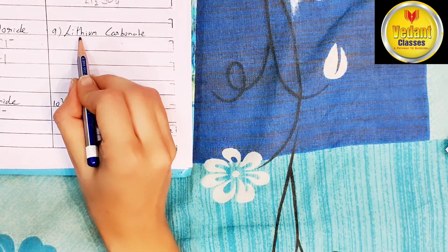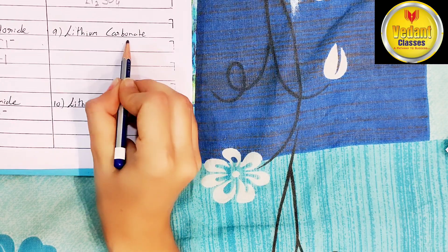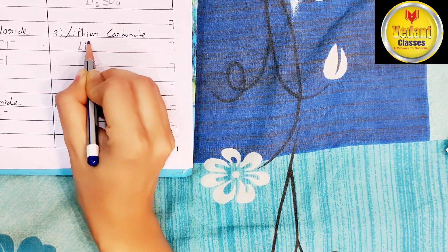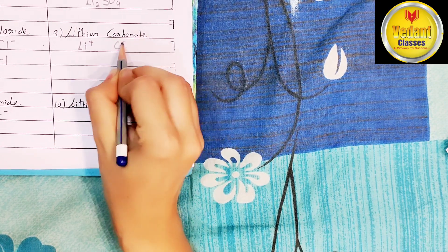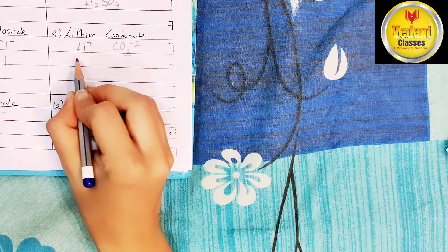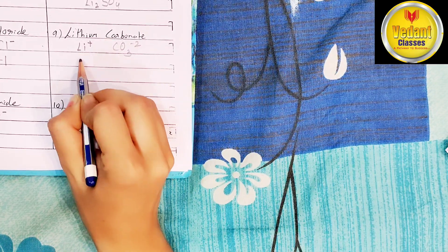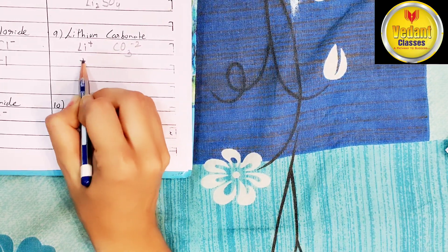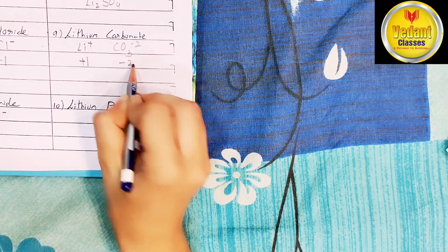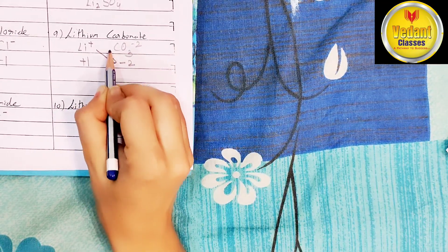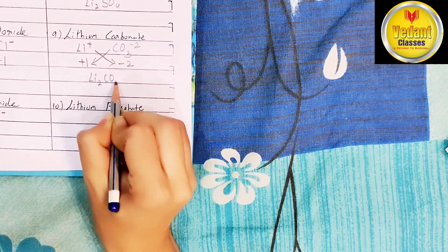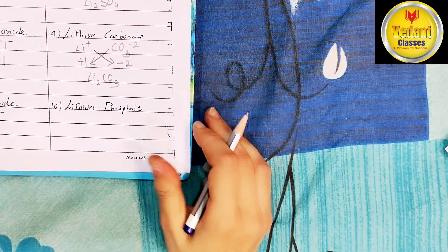Another compound is lithium carbonate. Valency of lithium ion is Li+ (plus 1), carbonate ion is CO3 2- (minus 2). Now cross the valency. Compound will be Li2CO3 — lithium carbonate.